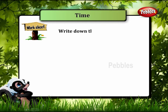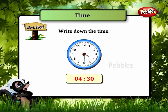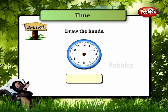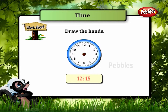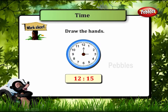Write down the time as shown by this clock. The time is 4:30. Draw the hands on this clock for the given time: 12:15. The shorter hand points to 12 and the longer hand to 3.